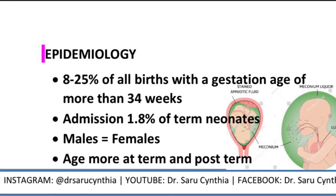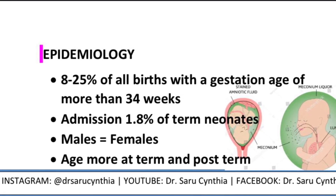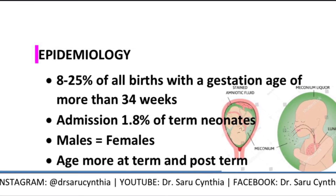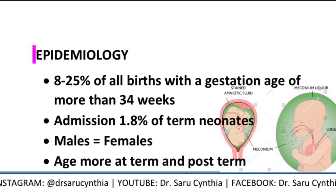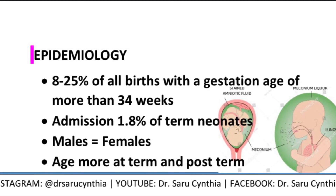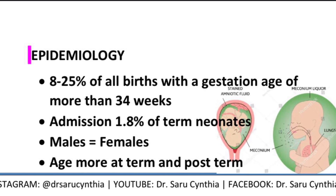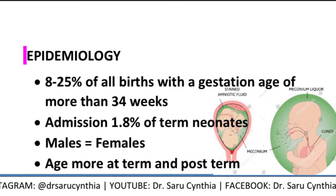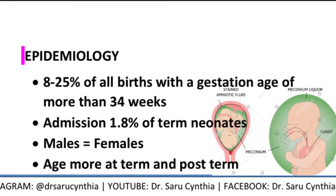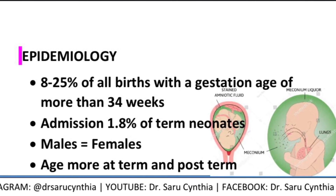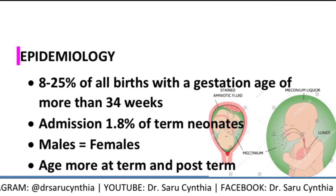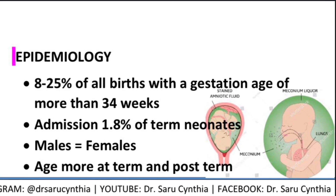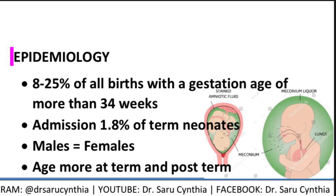Epidemiology: 8–25% of all births with gestational age of more than 34 weeks are associated with meconium-stained fluid. Admission occurs in 1.8% of term neonates. MAS affects equal female and male neonates. The age of occurrence is mainly in term or post-term babies — in preterm babies it is very unlikely — but for term and post-term babies, you can definitely encounter it if there was any fetal distress.